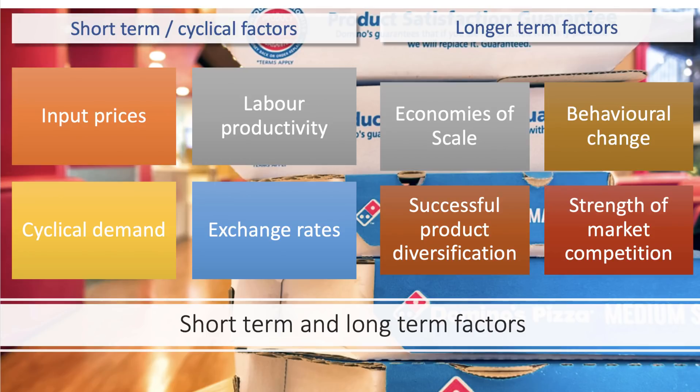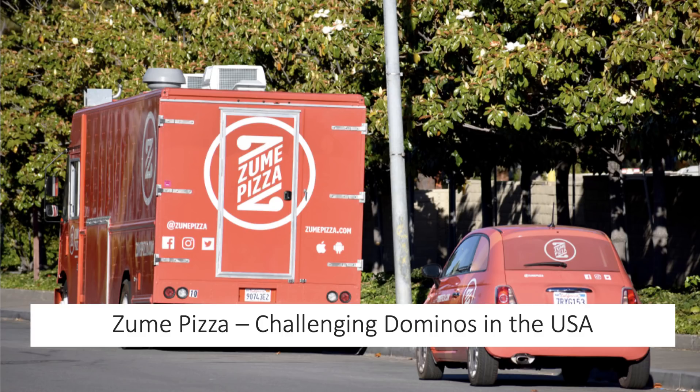Set against short-term cyclical factors are much longer-term considerations. Can Domino's exploit economies of scale? Long-term changes in consumer behavior are worth mentioning - the extent to which Domino's successfully diversifies into new products as consumer tastes and preferences change - and the long-term changes in market structure, which feed back to Domino's competitive position.